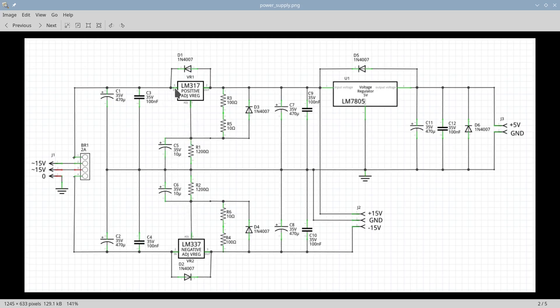Diodes D1, D2, D3, and D4 protect the voltage regulators during power-down, preventing damage when the voltages across capacitors C5, C6, C7, and C8 momentarily exceed the voltage at the bridge rectifier BR1. The voltage divider formed by R1, R3, and R5 sets the reference voltage needed for the LM317 to generate a precise 15V output. Similarly, the resistors R2, R4, and R6 perform the same function for the LM337, ensuring accurate regulation of the minus 15V output.